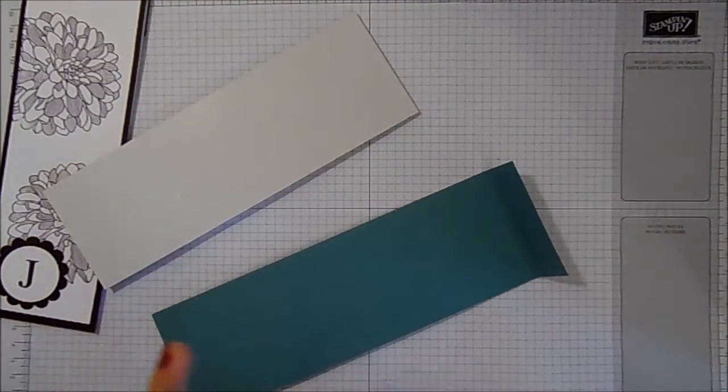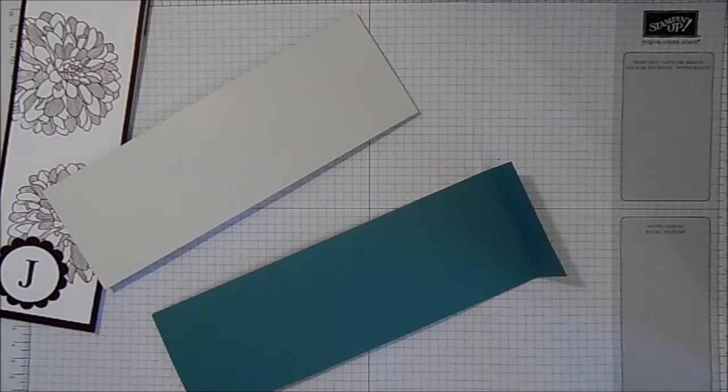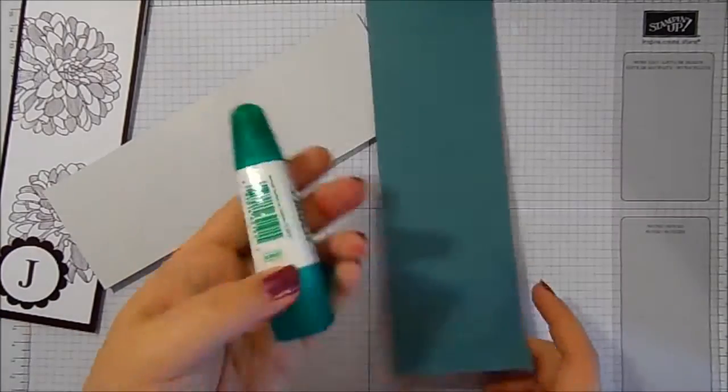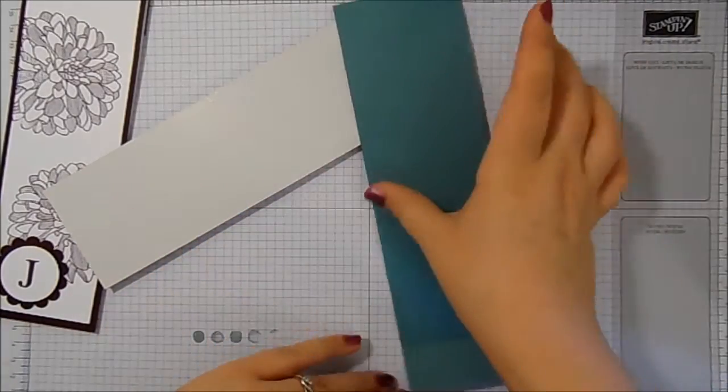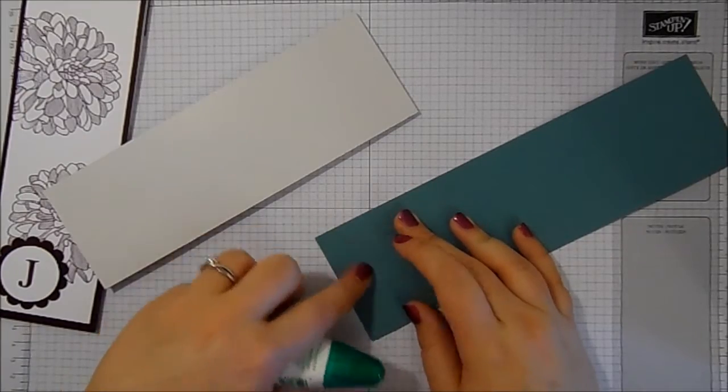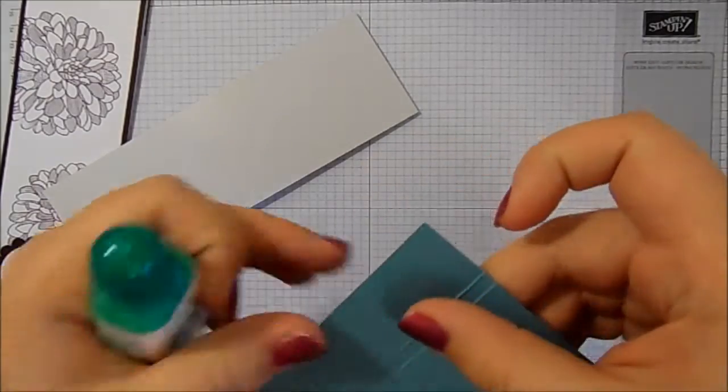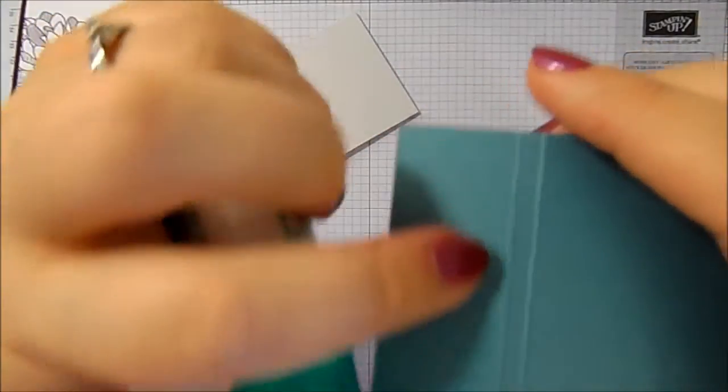Now I'm not normally a fan of wet glue. But for this project I'm going to use some Tombow liquid glue. And we're going to just push it on the very end flap. So just that bit there.